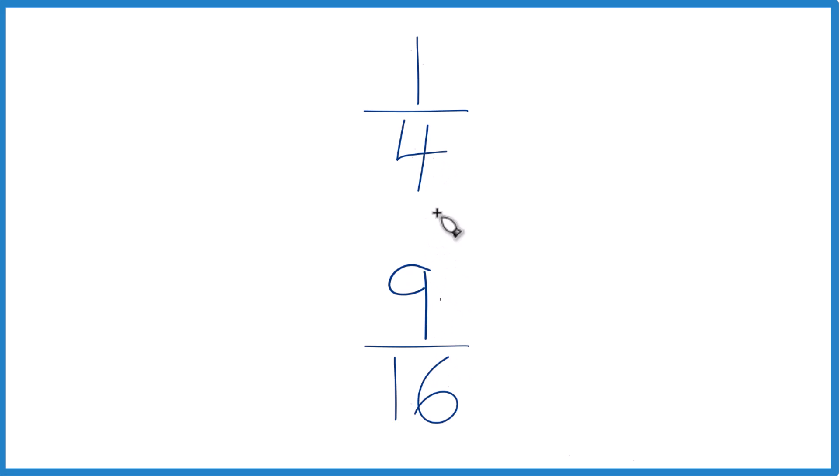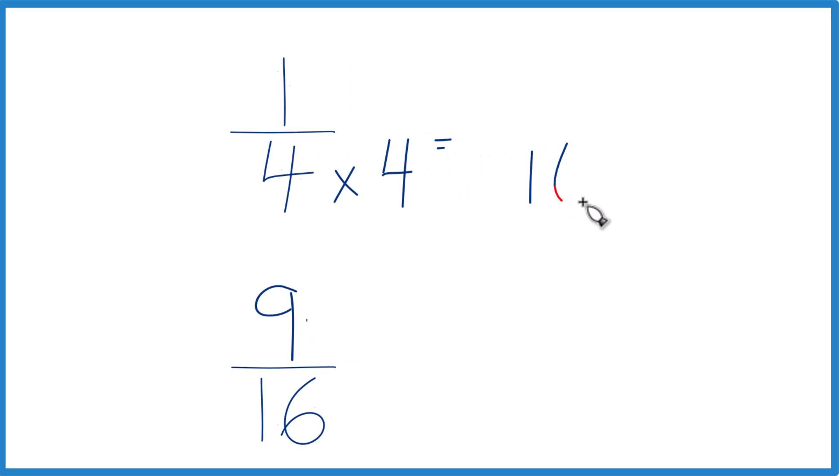4 goes into 16 four times. So I'm just going to multiply 4 times 4, and that'll give me 16. So I have 16 in my denominator. Down here I have 16 in my denominator as well.